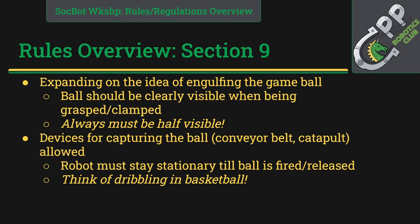The half-visible rule also gives the other team a chance to steal — if you've got the ball in your clamp, they could swing their own scoring arm and knock it off. It'd be boring if a robot just grabbed the ball, locked it up, drove to the goal, and dropped it in. For devices like a conveyor belt loader or trebuchet catapult, your robot must stay stationary while the ball is loading until it is fired or released. Think of it like traveling in basketball: once you've got the ball, you need to stand there.